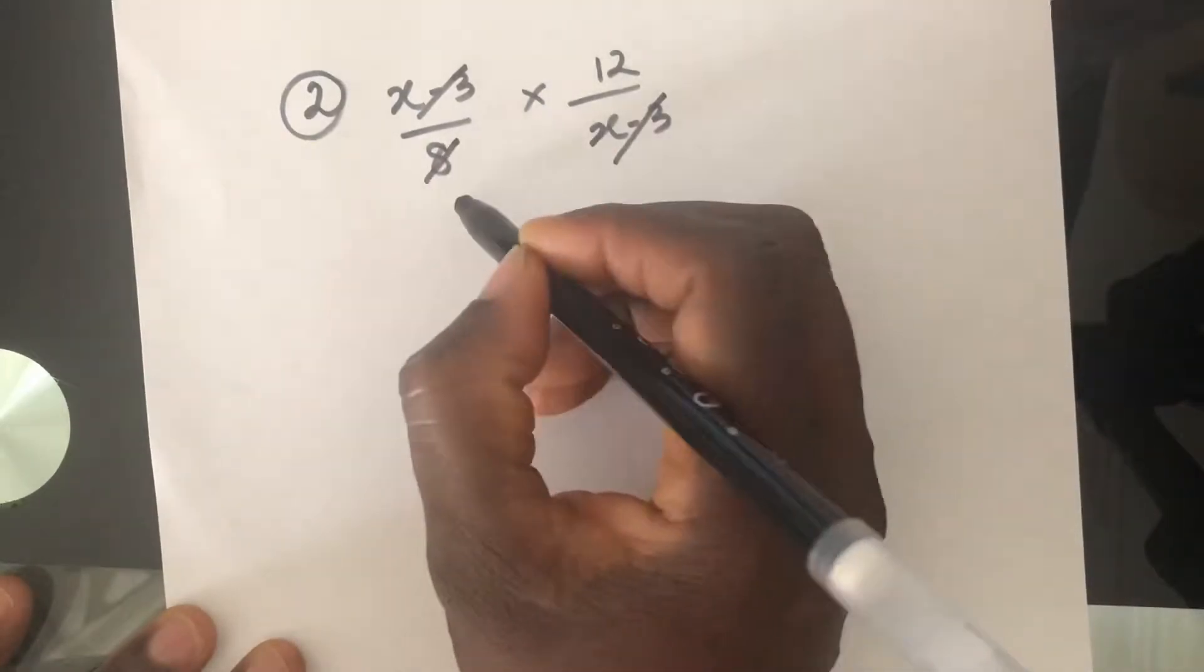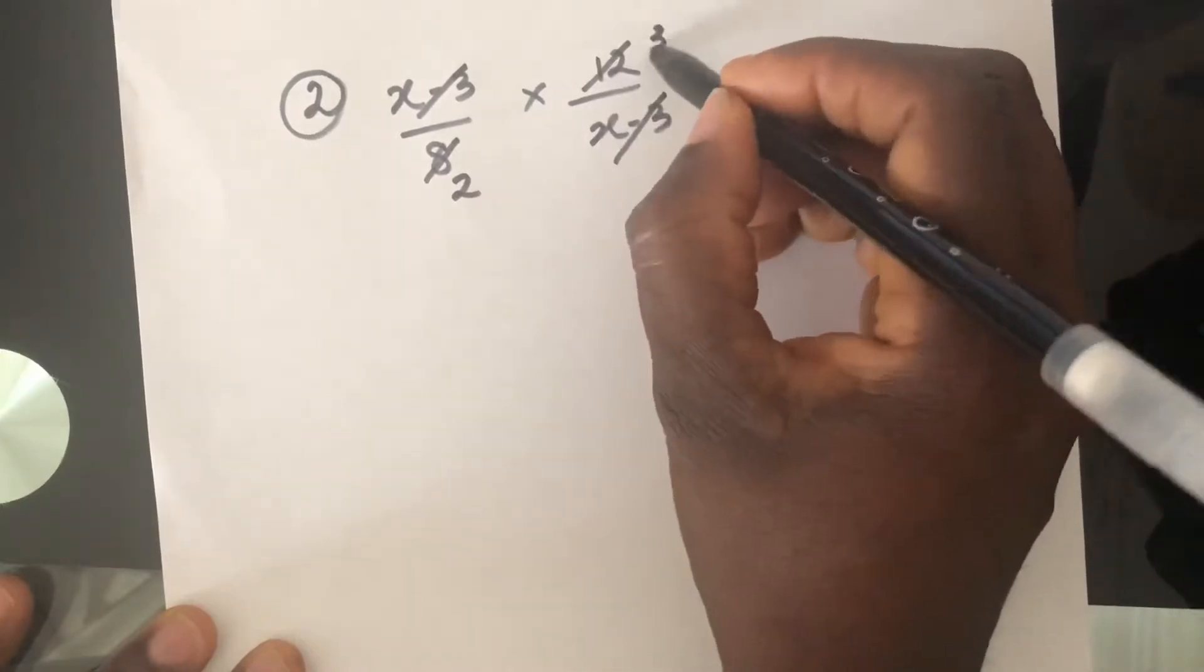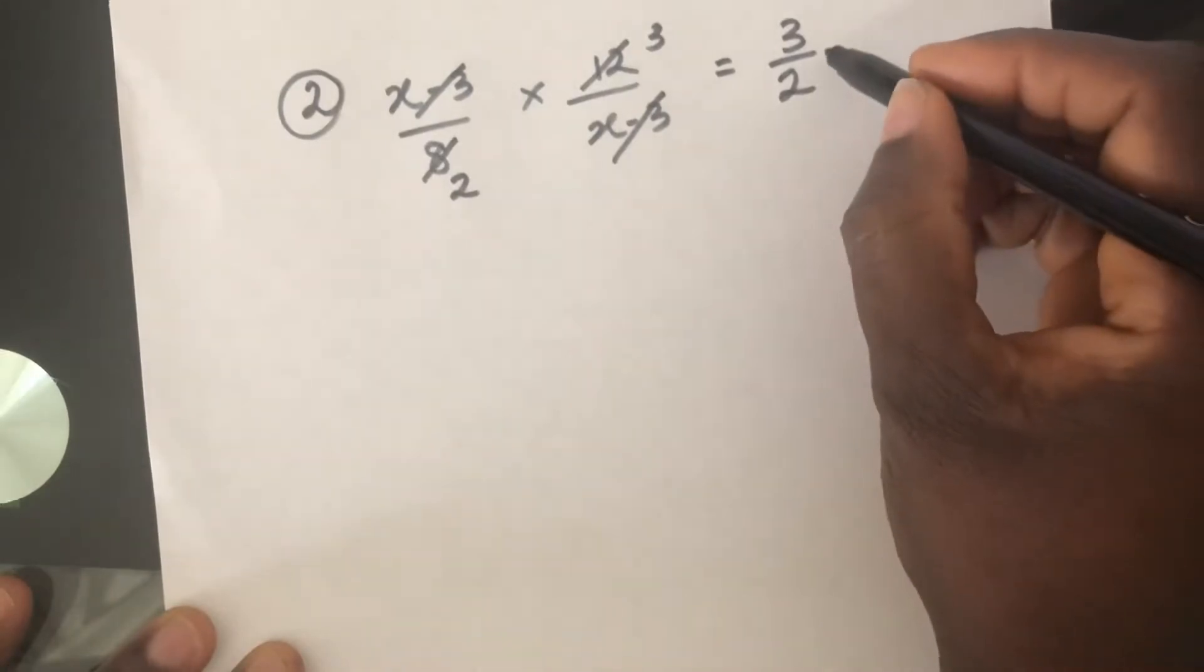And 4 can go into 8 two times. And 4 can go into 12 three times. So I'll be left with 3 halves. Yeah, and that would be my answer.